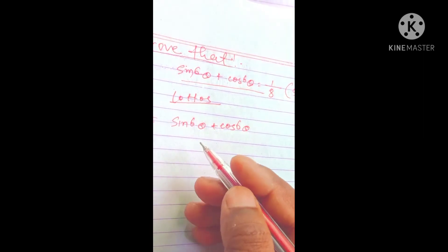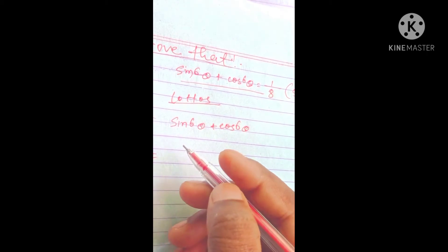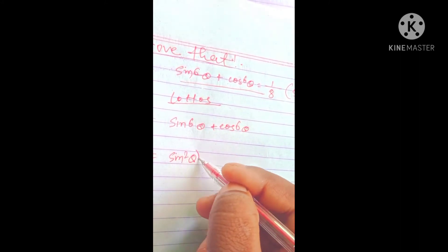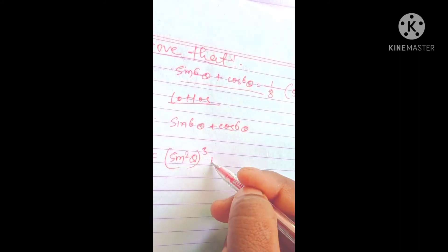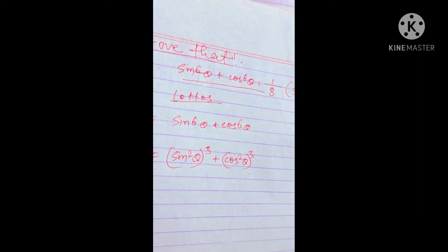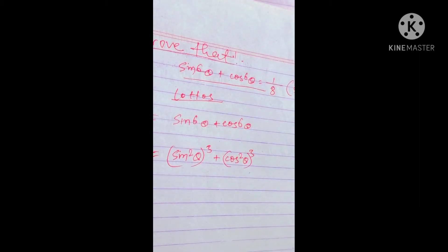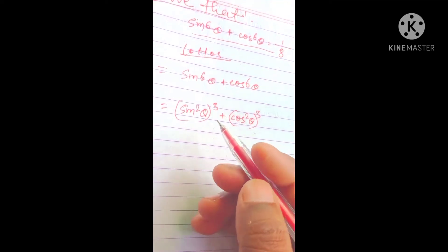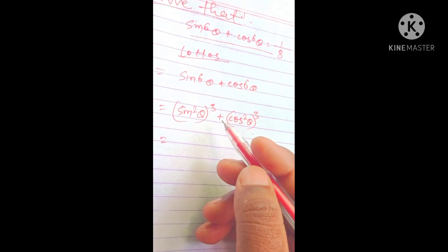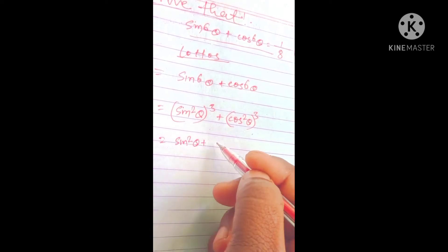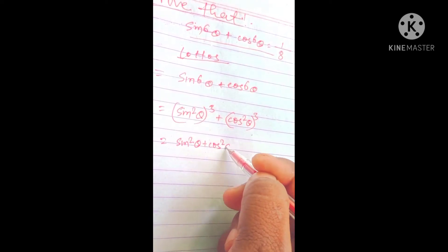Using the a³ + b³ formula: sin³θ + cos³θ, we have sin²θ + cos²θ applied as (aq + bq). The formula gives us sin²θ + cos²θ as the base identity.